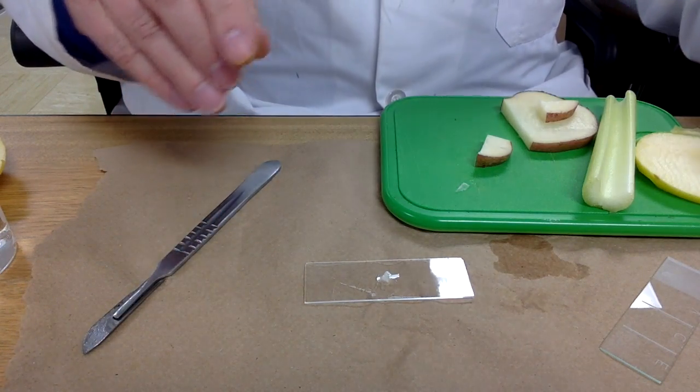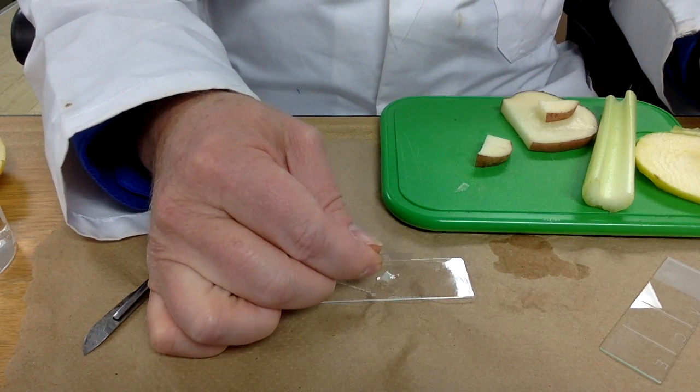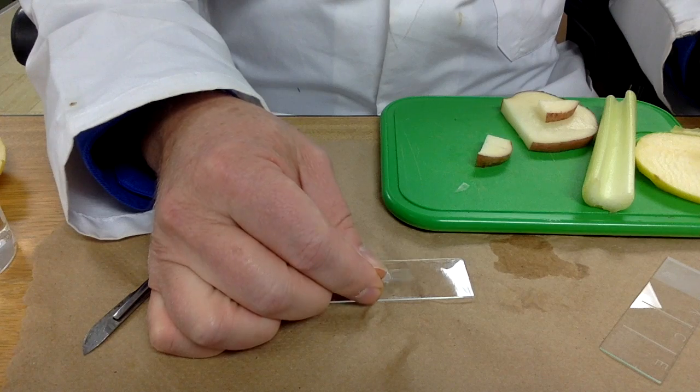Bring a cover slip over. Works well to catch some water. You can see it come under the cover slip, come at about a 45 degree angle.